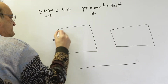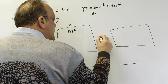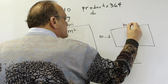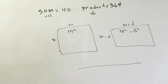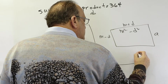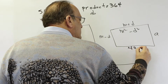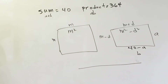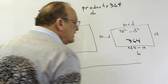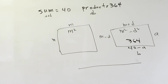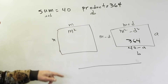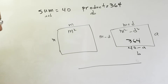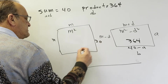The square will be m by m, its area is m squared. The rectangle will be m minus d times m plus d and the area will be m squared minus d squared. This side will be a and this side will be b, which will also be 40 minus a, because when you add a to b you get 40. The square and the rectangle have the same perimeter so they also have the same semi-perimeter — halfway around the rectangle equals halfway around the square. So if these two sides add to 40, these two sides do also, so each side is 20 which makes the area 400.